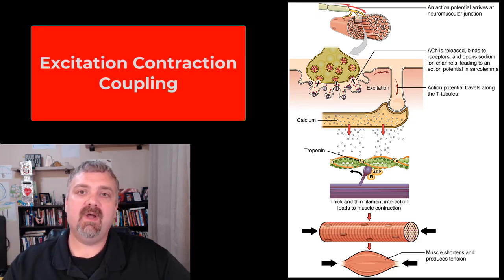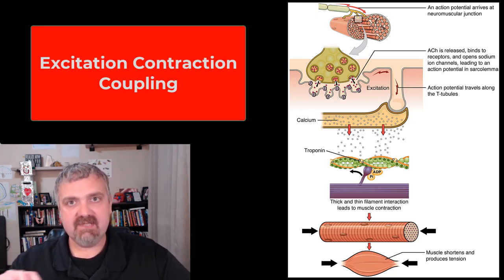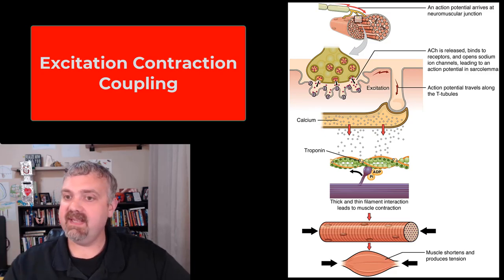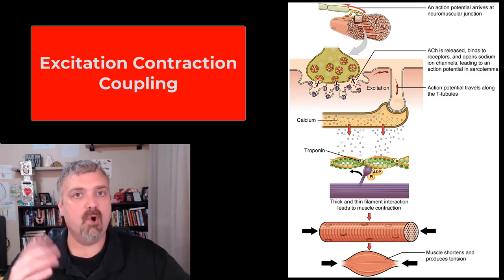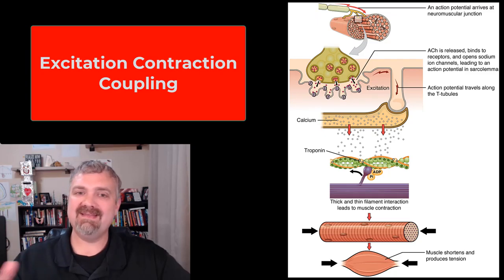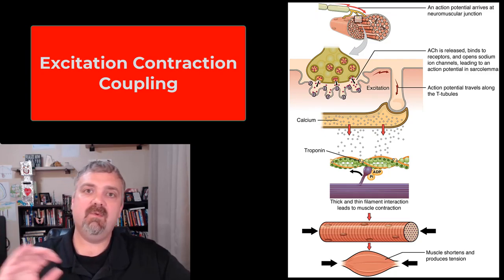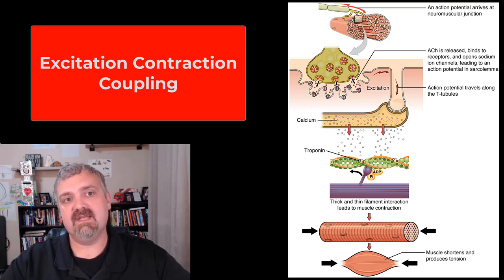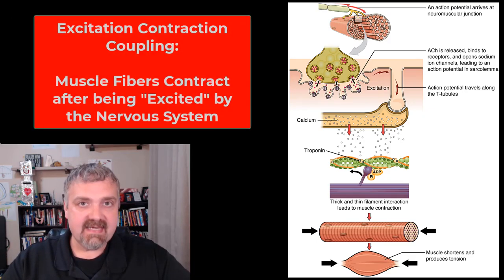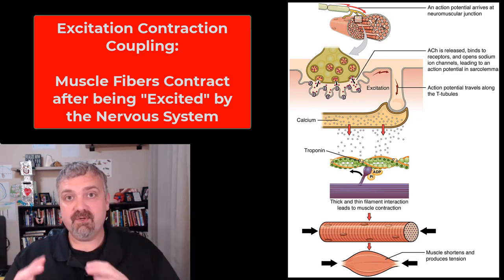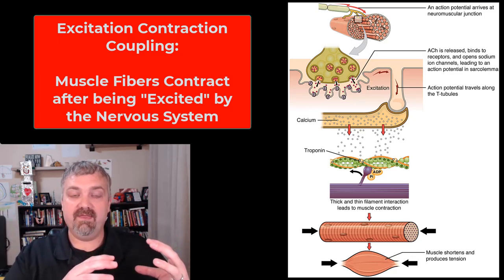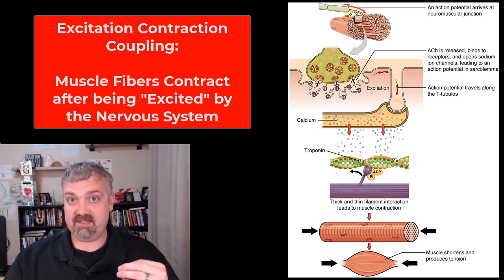Hey everybody, Dr. Roe here. In this video I want to talk about excitation-contraction coupling. Muscle contraction is complicated business — you're going to hear cross-bridge formation and lots of troponin and tropomyosin, lots of tricky terminology. I want to do a high-level overview and then we'll mine in deeper on some of these parts as we move forward. Excitation-contraction coupling says that a muscle contraction is coupled with excitation from the nervous system.